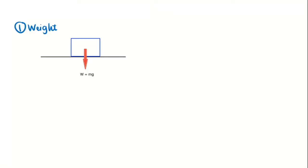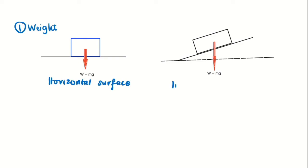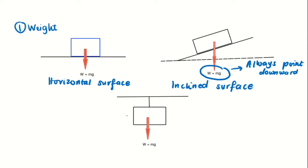Now let's look at how to draw diagrams representing each force. For weight on a horizontal surface and on an inclined surface, make sure the weight arrow always points downward, regardless of the angle of the surface. The same applies to hanging objects — weight always points downward.